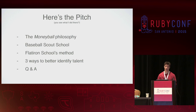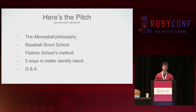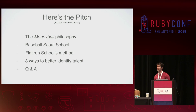Here's what we're going to go over today. I'm going to tell you a little bit about the Moneyball philosophy and why it created such a shift in baseball. Then we're all going to scout school together to see how professional baseball talent has been traditionally scouted. After that, we'll see how talented students are identified at the Flatiron School. And finally, based on what we've learned, we're going to discuss three ways to better understand and evaluate developer talent going forward. If you're still awake at that point, we'll hopefully do some Q&A.